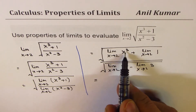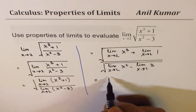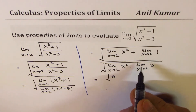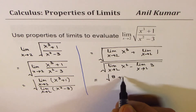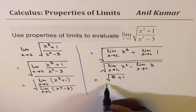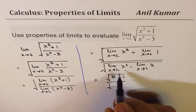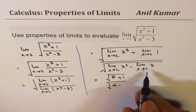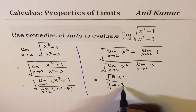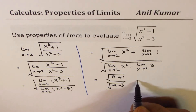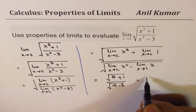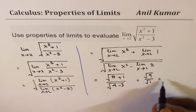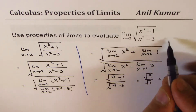Now substituting 2: in the numerator we get 8 plus 1 — the constant limit is 1 — divided by 2 squared which is 4, minus the constant 3. That gives us the square root of 9 over 1, which equals 3. So the limit of this function as x approaches 2 is 3.